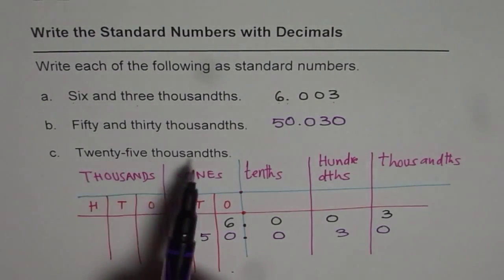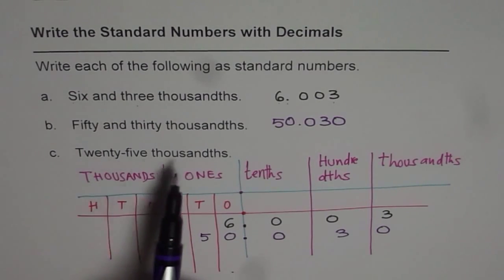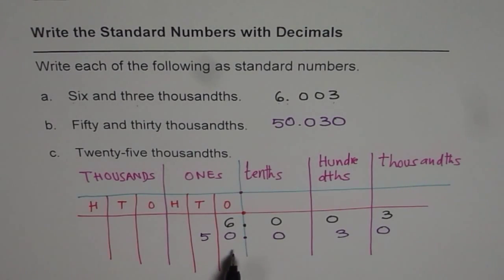Then we have twenty-five thousandths. That should be easy. Now if it is twenty-five thousandths, what comes before decimal? Zero.